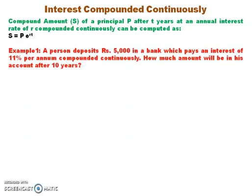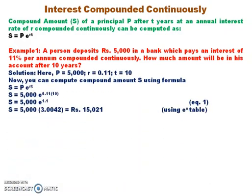Let us take an example. A person deposits rupees 5000 in a bank which pays an interest of 11% per annum compounded continuously. How much amount will be in his account after 10 years? Here P equals 5000, R equals 0.11, and T equals 10. Using S equals P into e raised to power RT, the value of e raised to power 1.1 can be found from an EX table and equals 3.0042. Using this value, S equals rupees 15,021.